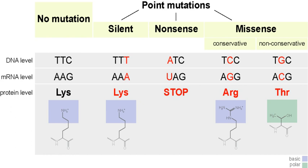Point mutations in multiple tumor suppressor proteins cause cancer. For instance, point mutations in adenomatous polyposis coli promote tumorigenesis. A novel assay, fast parallel proteolysis (FastPP), might help swift screening of specific stability defects in individual cancer patients.